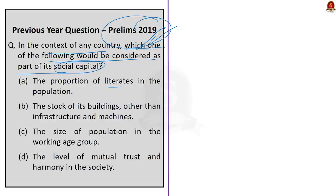the proportion of literates in the population. Option B: the stock of its buildings, other infrastructure and machines. Option C: the size of population in the working age group. And option D: the level of mutual trust and harmony in the society.